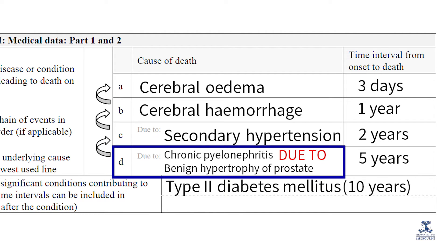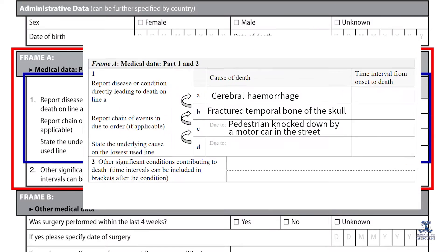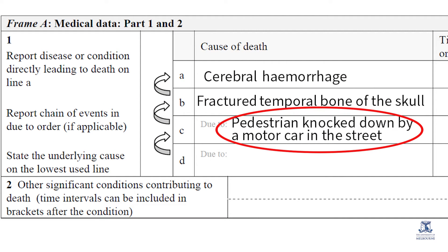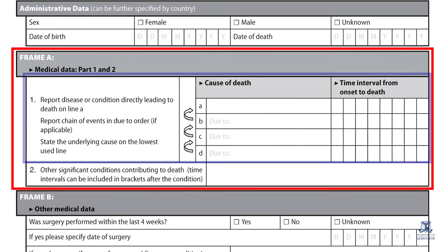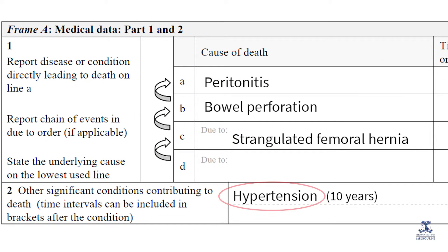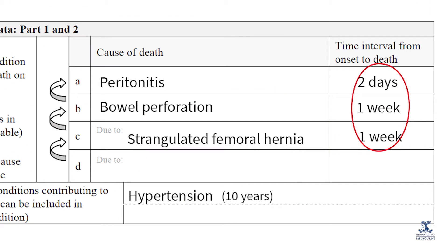Alternatively, two conditions can be entered in the lowest used line, writing 'Due To' in between. The underlying cause of death should never be recorded in Part 2 of the death certificate. The circumstances of death from a motor vehicle accident, suicide or homicide are known as external causes of death. In cases where death occurs as a consequence of injury or violence, the external cause should always be listed as the underlying cause. All other causes that may have contributed to the death but did not take part in the direct sequence of events should be documented in Part 2. The column on the far right-hand side is for recording the approximate time interval between the onset of each condition and the death, and should be entered for all conditions reported, including those in Part 2.